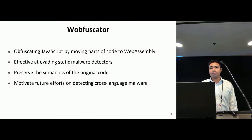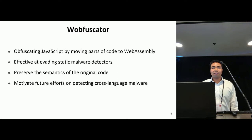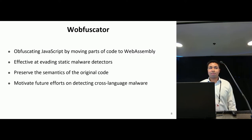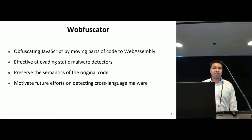We leverage WebAssembly in our tool, WafiSkater. WafiSkater is a tool that translates JavaScript code into WebAssembly. We show that WafiSkater is effective at evading learning-based, state-of-the-art malware detectors. We also show that it preserves the original semantics of the code and imposes little overhead. We hope that our work helps motivate future efforts in designing cross-language malware detection.